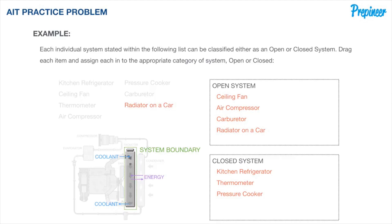To recap: a kitchen refrigerator is a closed system, a ceiling fan is an open system, a thermometer is a closed system, an air compressor is an open system, a pressure cooker is a closed system, a carburetor is an open system, and a radiator on a car is an open system. The number one thing differentiating all of these systems is mass flow across the system boundaries. Remember that on exam day and this problem will take you seconds.